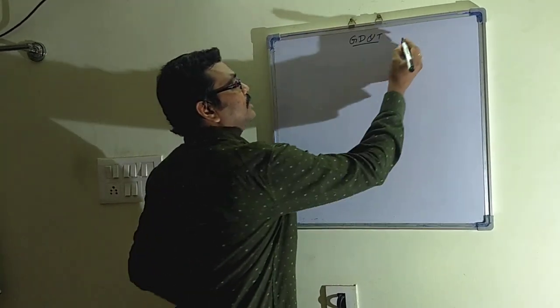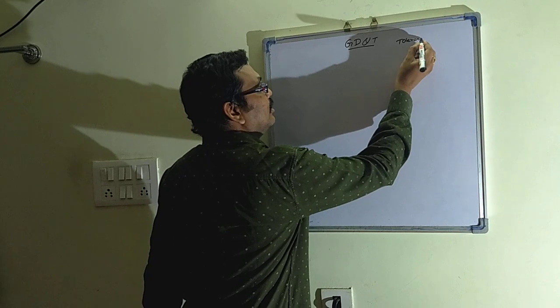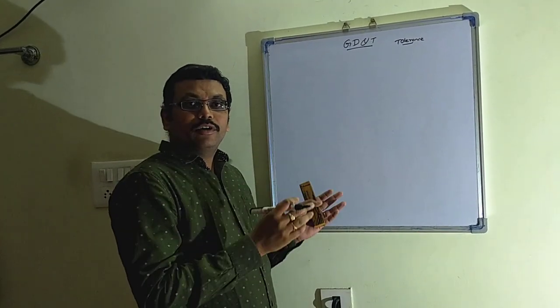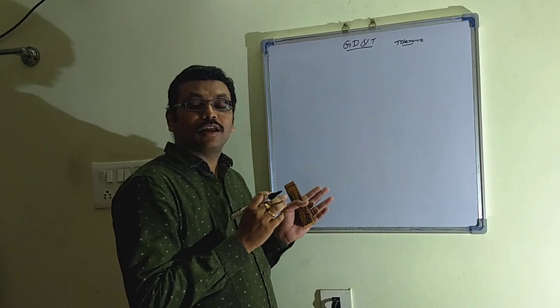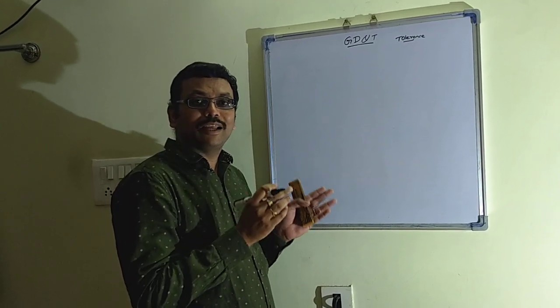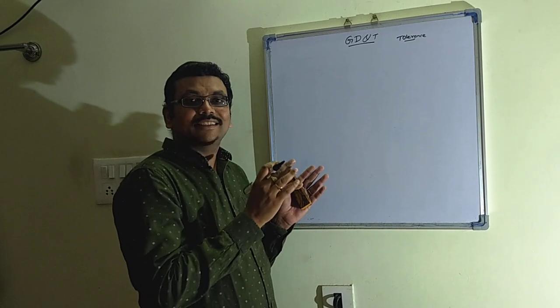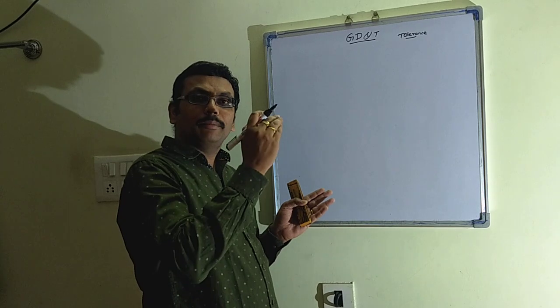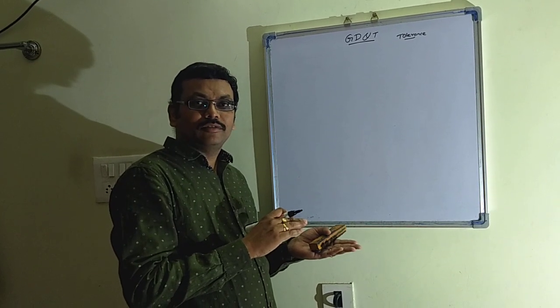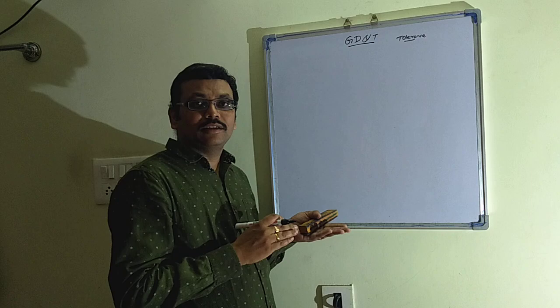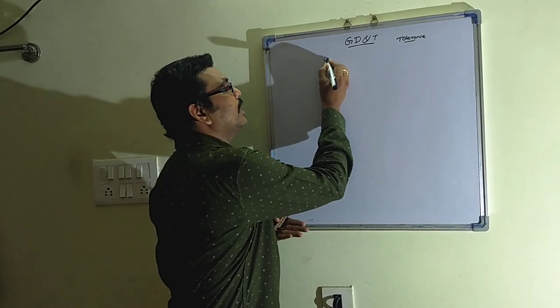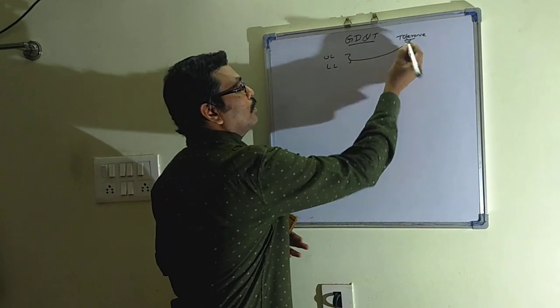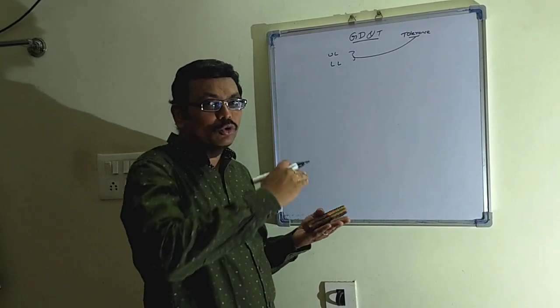What about this tolerance? In the world, no one is going to produce a product with exact size. There should be some upper limit as well as the lower limit for the production of the component. So that upper limit and lower limit we call as a tolerance - that is a tolerance zone.